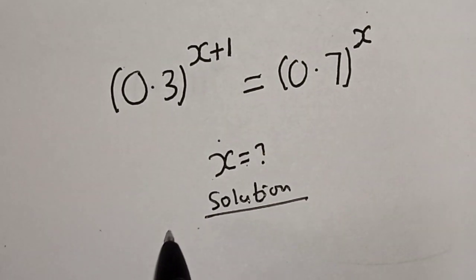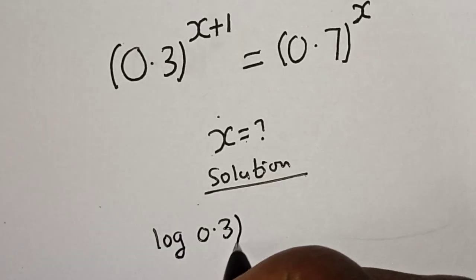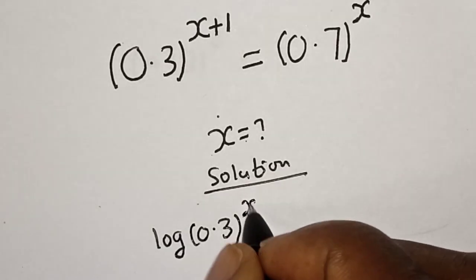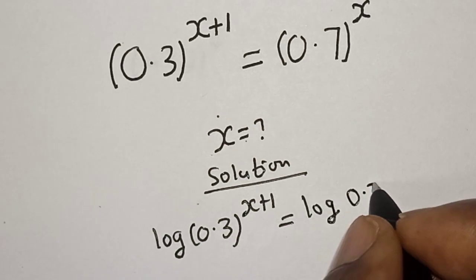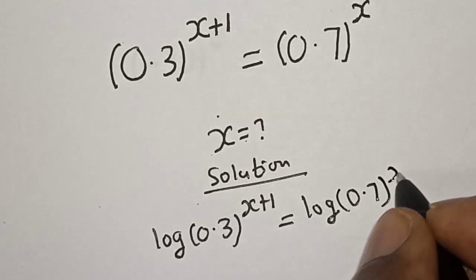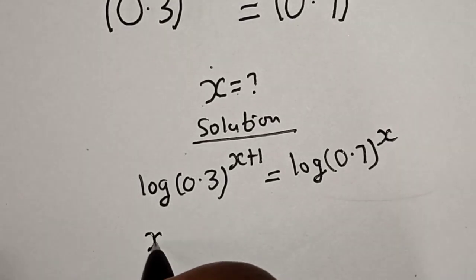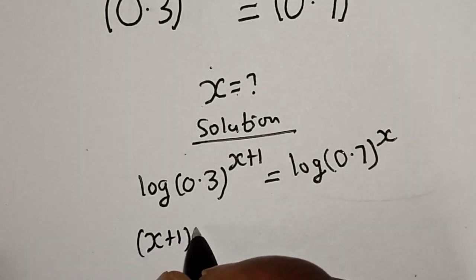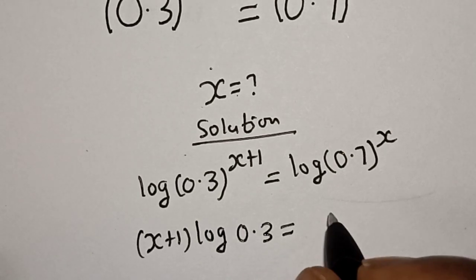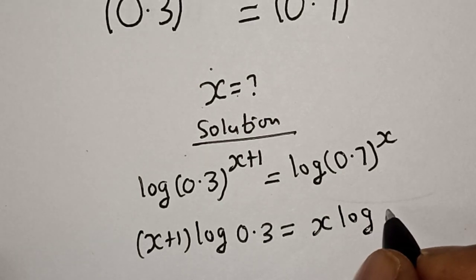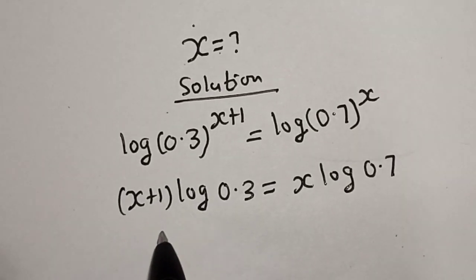Solution: let's take the log of both sides. Log of 0.3 raised to power x plus 1 is equal to log of 0.7 raised to power x. Applying the power rule, this gives us (x + 1) log 0.3 is equal to x log 0.7.